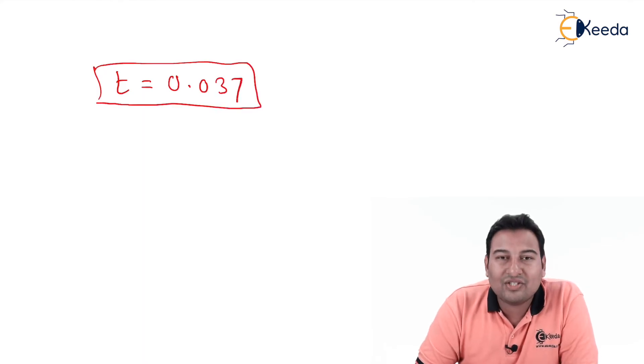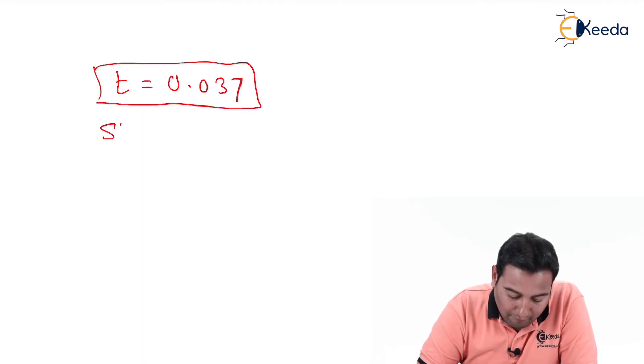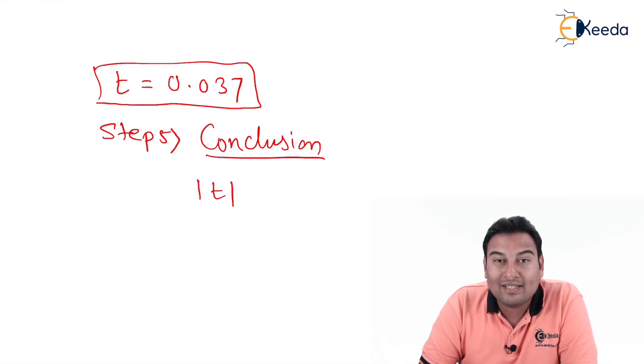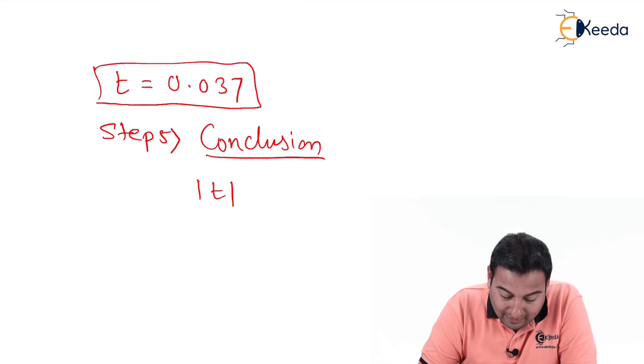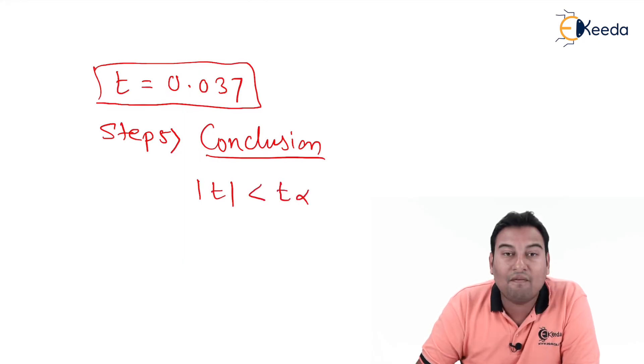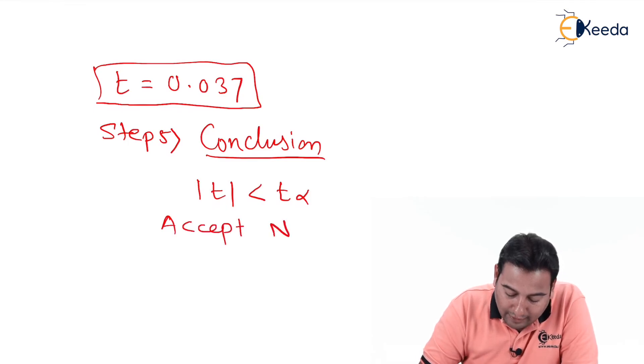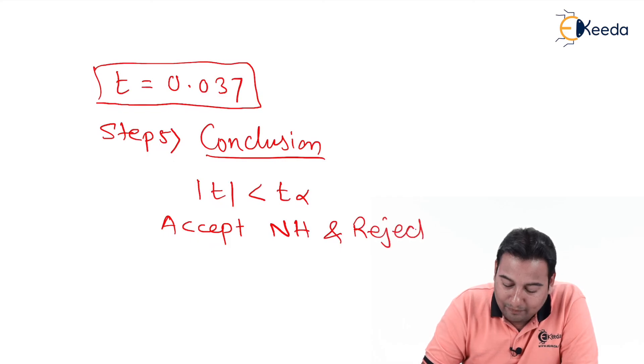Let us see the last step of the problem, step number 5, the conclusion part. Here in this case, mod t, that is 0.037, is less than t alpha, because t alpha was 1.833. That means we are going to accept null hypothesis and reject alternate hypothesis.